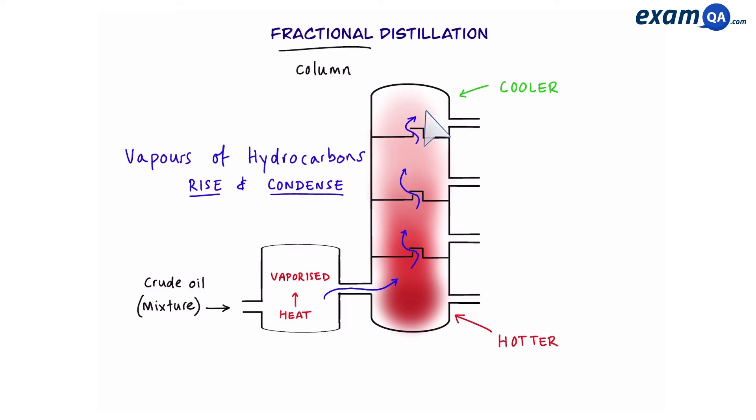So the hydrocarbon vapors will rise and condense at different points. Shorter ones because they have lower boiling point will condense near the top where it's cooler. And longer hydrocarbons with high boiling points will condense near the bottom.